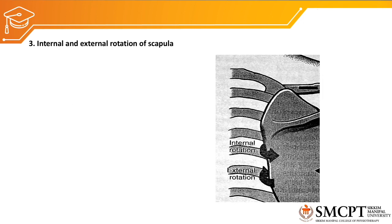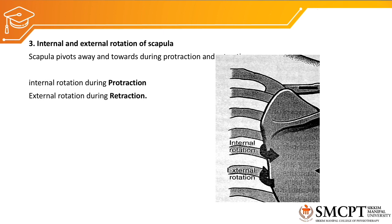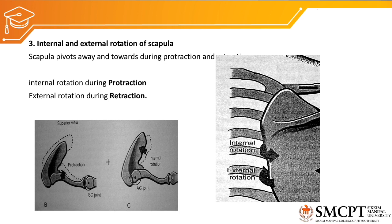The next movement that contributes to protraction and retraction is internal and external rotation of the scapula. I understand that the movements of the acromioclavicular joint, sternoclavicular joint and scapulothoracic joint are quite complex, but if you read it again and again it becomes easier. The scapula pivots away and towards during protraction and retraction — internal rotation of the scapula occurs during protraction whereas external rotation occurs during retraction. This internal and external rotation mainly occurs at the acromioclavicular joint.